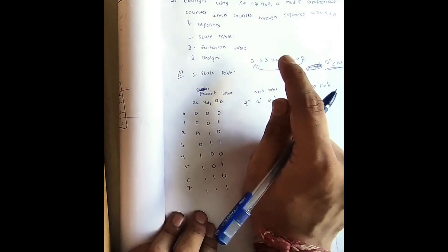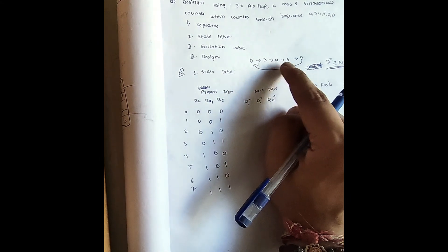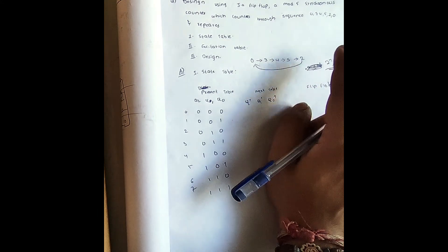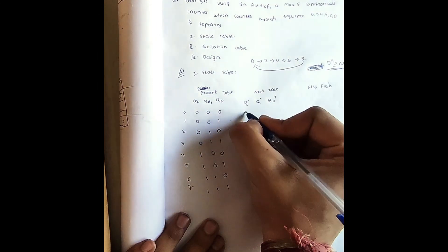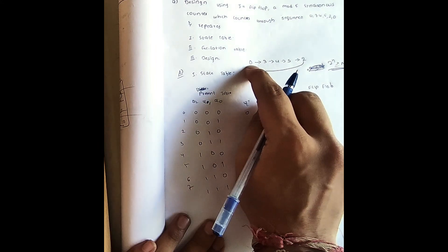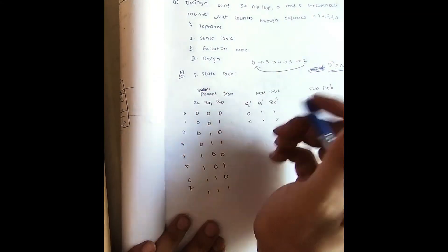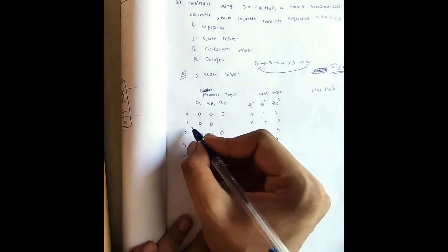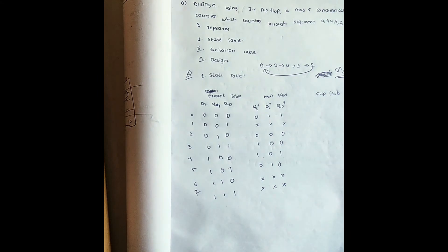The next state is determined by the sequence: after 0 comes 3, after 3 comes 4, after 4 comes 5, after 5 comes 2, and after 2 comes 0. So for present state 0 (000), the next state is 3 (011). For present state 1, there is no defined next state, so we write x x x. For states 3→4 (100), 4→5 (101), 5→2 (010), and states 6 and 7 are also don't-care (x x x).